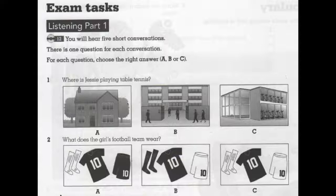1. Where is Jessie playing table tennis? Where's your sister, Robert? Jessie's playing table tennis with her friend Kate. They went after school. To Kate's house, you mean? That's right. And they're going to the sports centre to play volleyball after that.